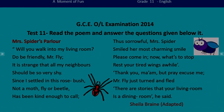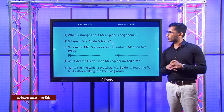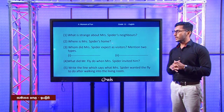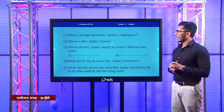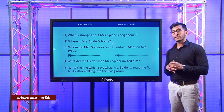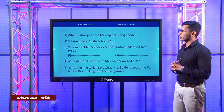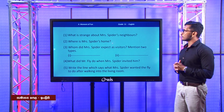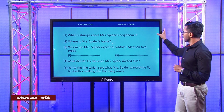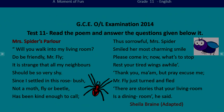Now let's look at the questions. What is strange about Mrs. Spider's neighbors? The key words are 'strange' and 'Mrs. Spider.' Let's look at the poem — third line: 'it is strange that all my neighbors should be so very shy.' So here we have the word 'strange.' Neighbors are very shy.